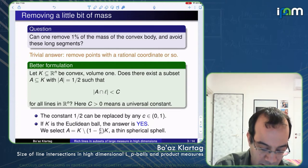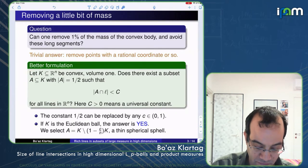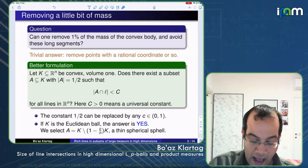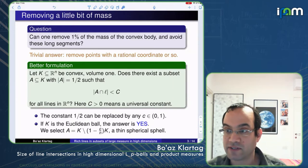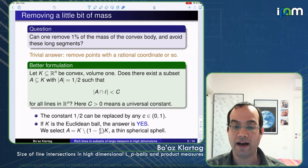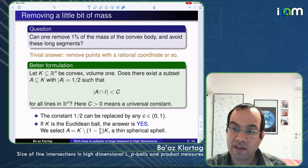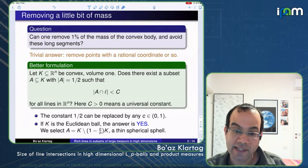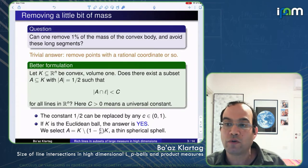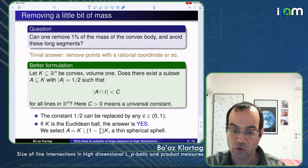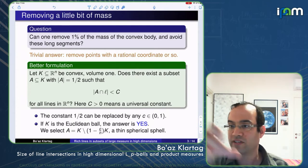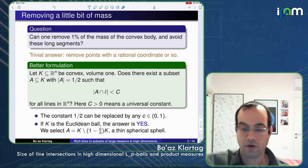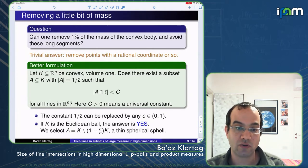Let's formulate the question better. Suppose K in ℝⁿ is a convex body of volume one. Does there exist a measurable subset A whose measure is one half, such that whenever you take any line intersected with A, you get something of small size — the Lebesgue measure of the intersection is at most some universal constant?